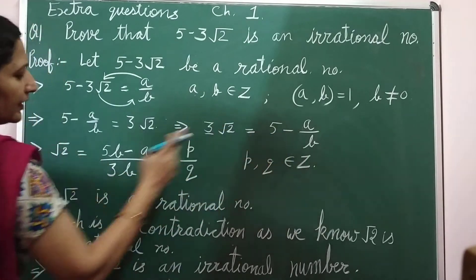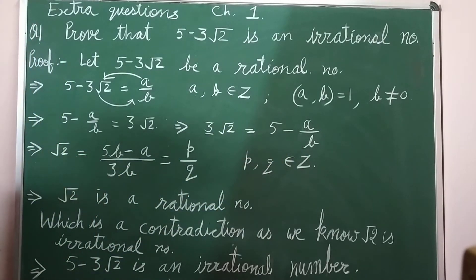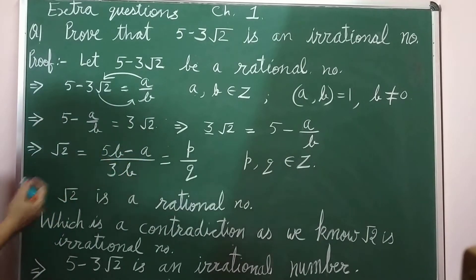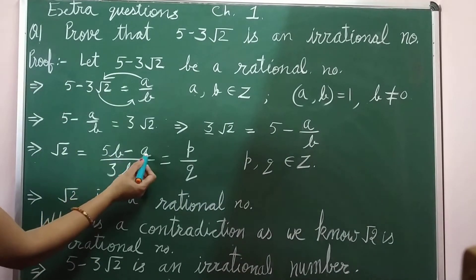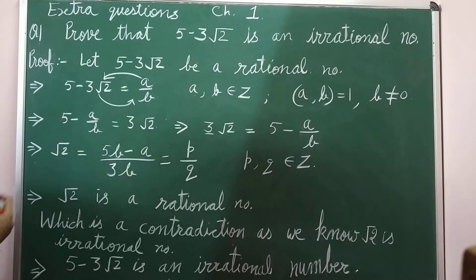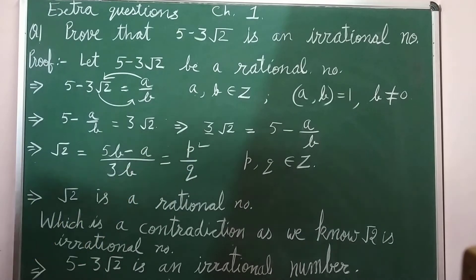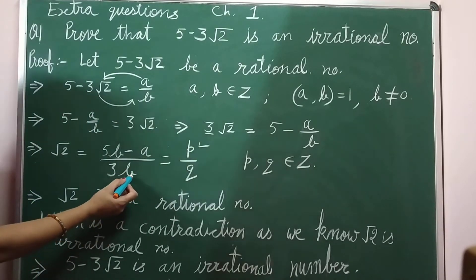Now if we see carefully here, a and b both are integral values, and when we multiply b by 5, it will also be an integral value. So when we are subtracting two integral values, then their difference will also be an integral value.